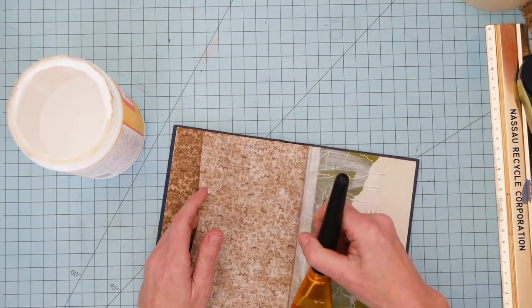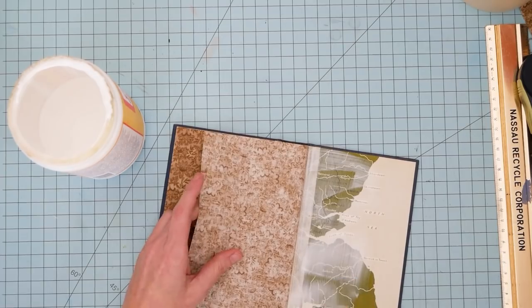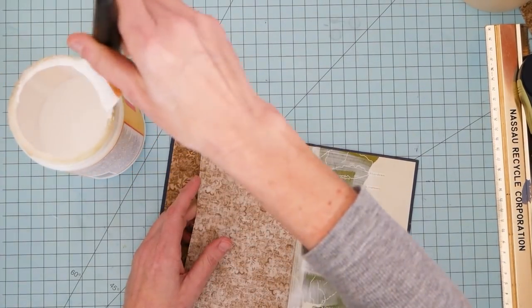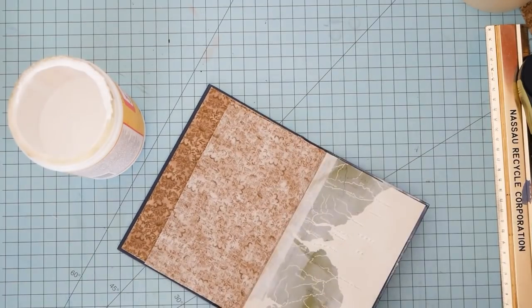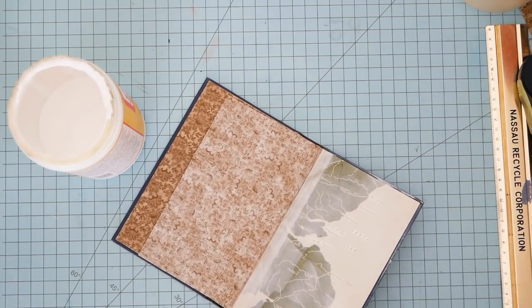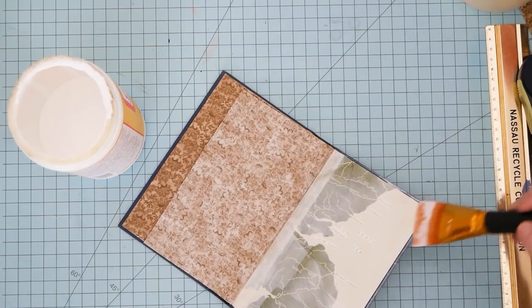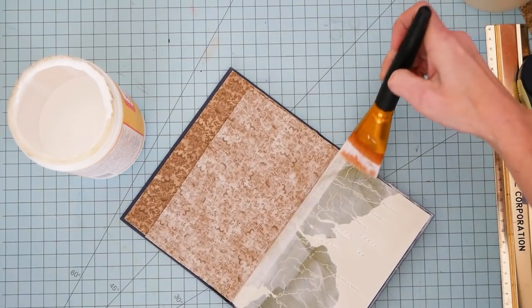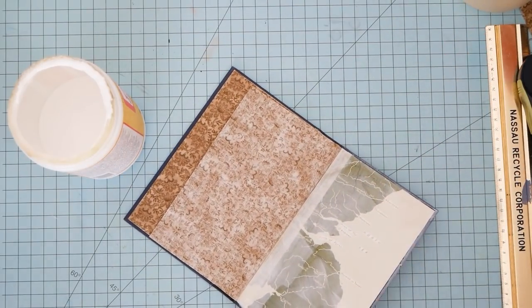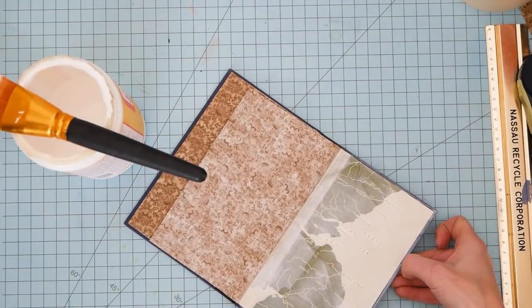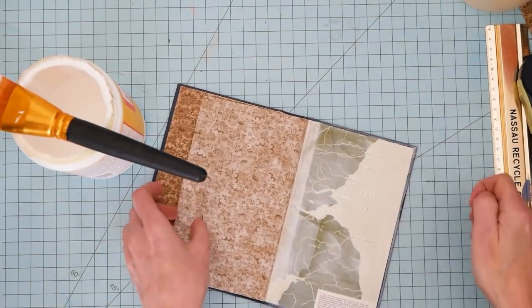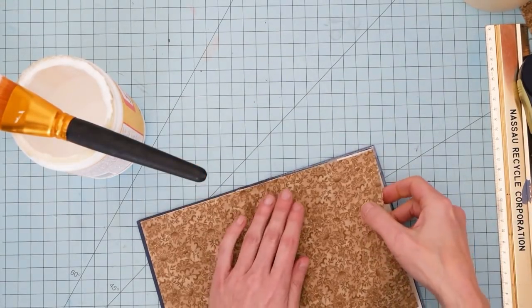I am always in awe at what quilters, how they cut fabric and how it just ends up perfect every time. So I'm just running a little bit of Mod Podge along. I don't care if it goes over the edge a little bit. I don't care. Mod Podge dries clear, so at this point I'm okay with that.